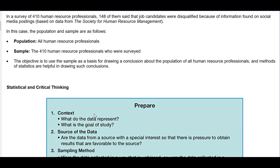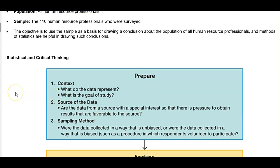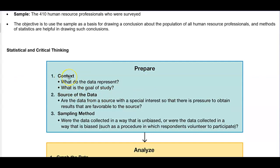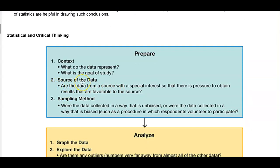Here is a list of statistical and critical thinking. The first thing you would do is prepare. Number one, you'd have the context. What do the data represent? What is the goal of the study? Number two, source of the data. Are the data from a source with a special interest so that there is pressure to obtain results that are favorable to the source? Sampling method: Were the data collected in a way that is unbiased or were the data collected in a way that is biased, such as a procedure in which respondents volunteer to participate?